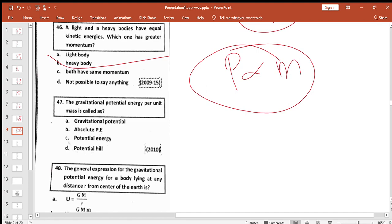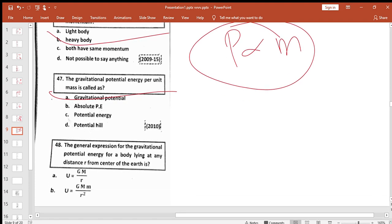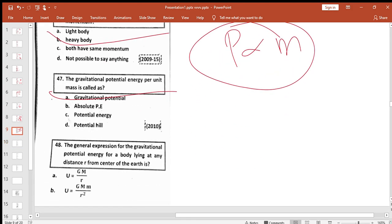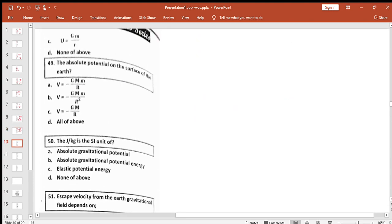Gravitational potential energy per unit mass is called gravitational potential. The general expression for gravitational potential energy for a body at any distance from center of earth - the general formula we have is U equals negative GMm by r. This is the general formula.